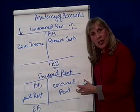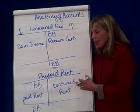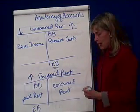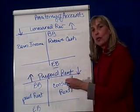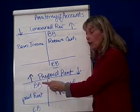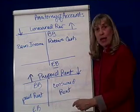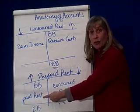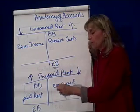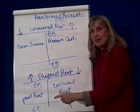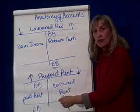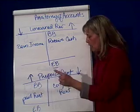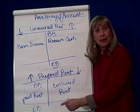Prepaid rent is another account you'll see in an adjusting journal entry. That's an asset account, so assets are increased by debits and decreased by credits. This prepaid account will have a debit beginning balance and a debit ending balance. When you've paid for your insurance or rent before you've consumed it, what you find on the debit side of the T-account is how much rent you paid before you used it — in other words, how much cash went out to pay for your rent.